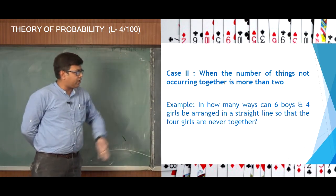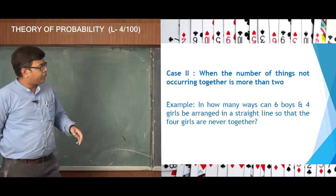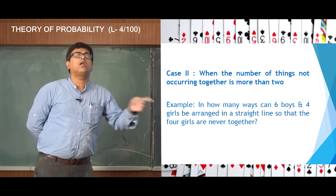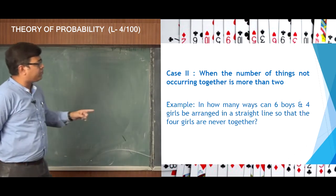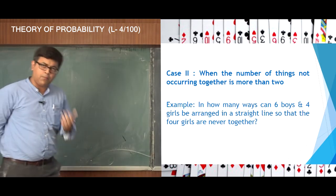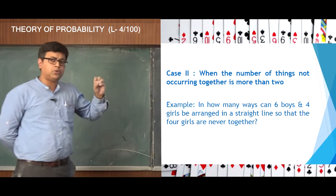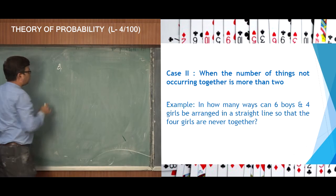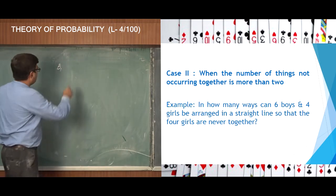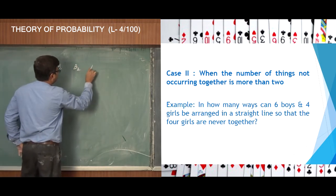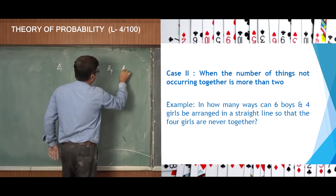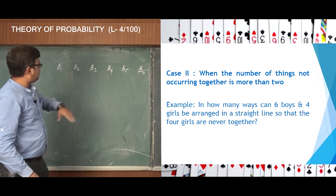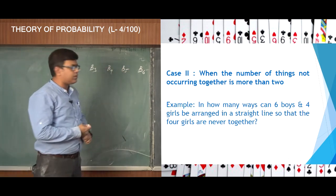Since they are sitting in a straight line, like on a bench or a row, the only possibility of satisfying this condition is that they sit in an alternate manner. Since they are going to sit in an alternate manner and there is no restriction on the boys, let us fix up the positions of the boys first. The boys are marked as b1, b2, b3, b4, b5, and b6.